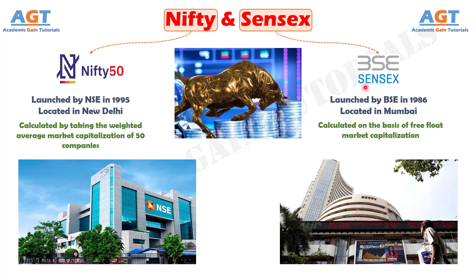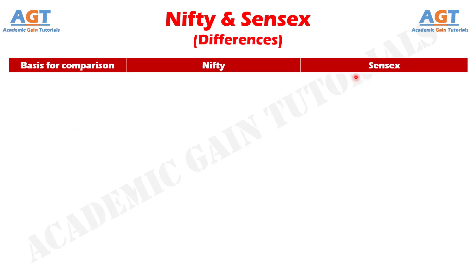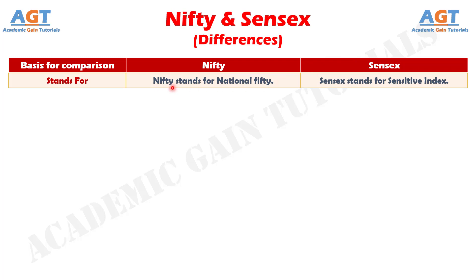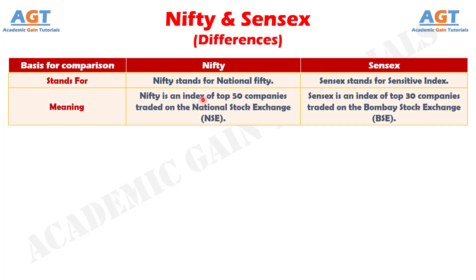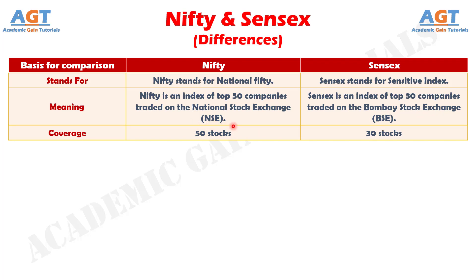So, let's look into the basic differences between Nifty and Sensex in a tabular form. Difference Number 1: Nifty stands for National 50, whereas Sensex stands for Sensitive Index. Number 2: Nifty is an index of top 50 companies traded on the National Stock Exchange, whereas Sensex is an index of top 30 companies traded on the Bombay Stock Exchange. Number 3: 50 companies are indexed in Nifty, while 30 companies are indexed in Sensex.